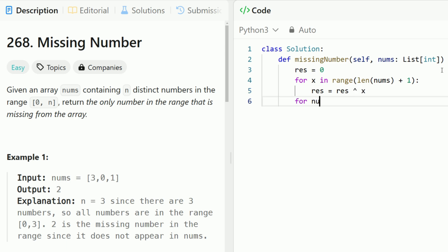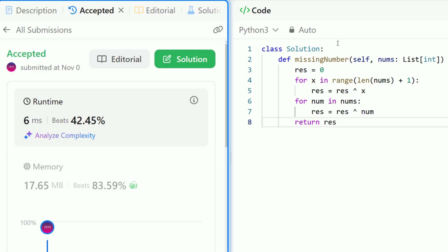Now I'm going to say for num in nums, for every number in nums, the idea is we do XOR with the result. So res equals res XOR the number. And then that's it. We return back the result because we're left with the missing number. Let's run this algorithm and it succeeds.